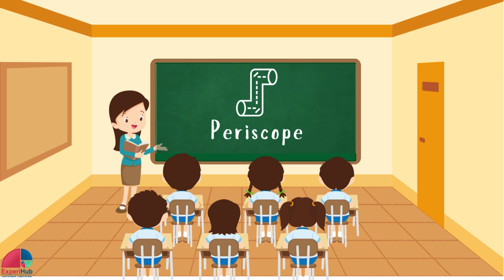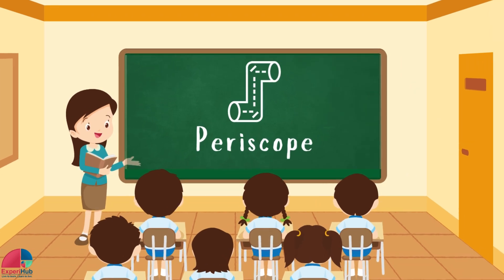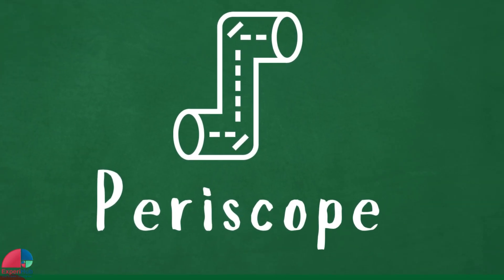In today's class, we're going to learn about periscopes and why their mirrors are placed at a 45 degree angle.